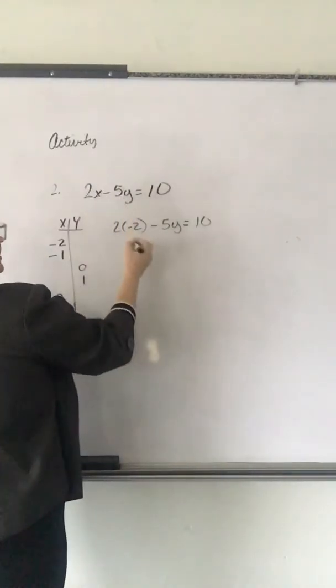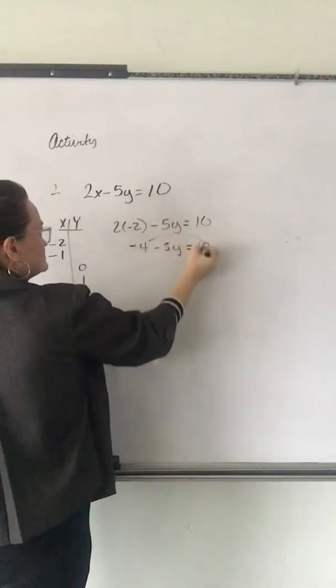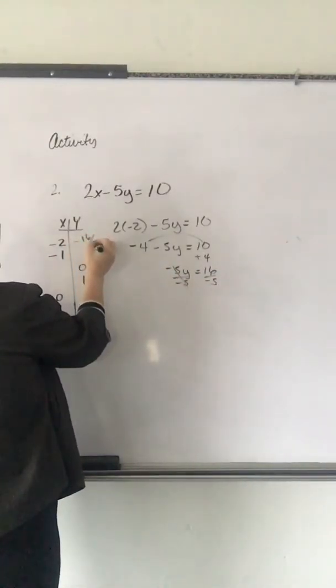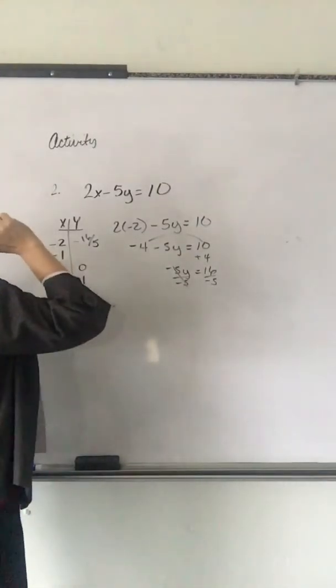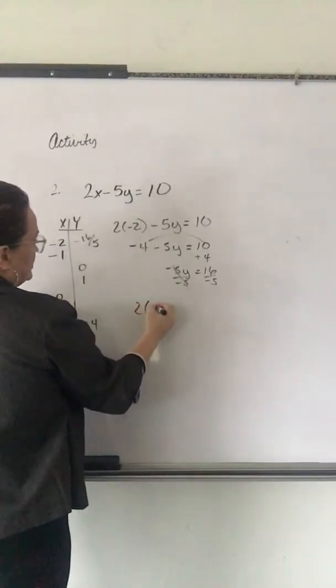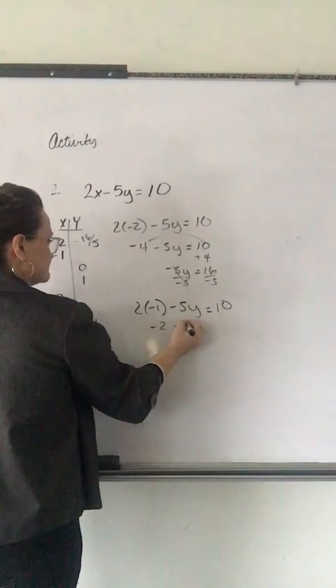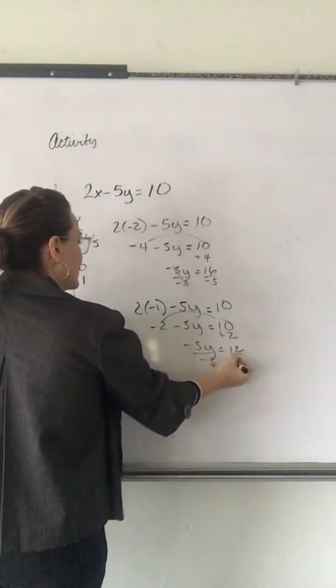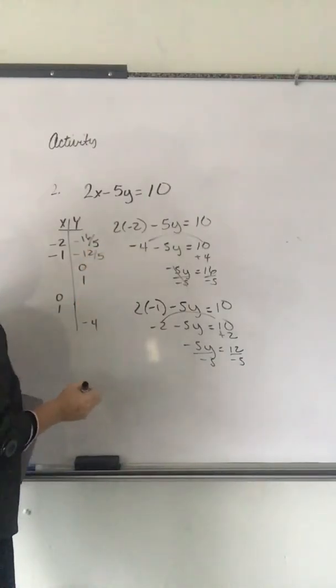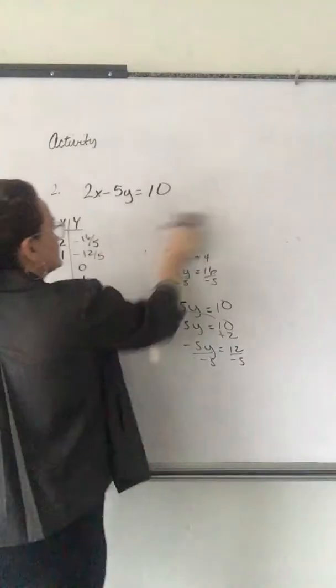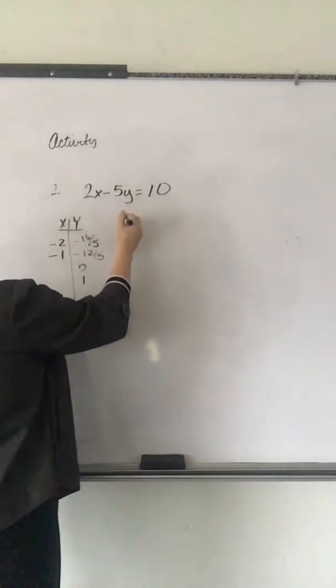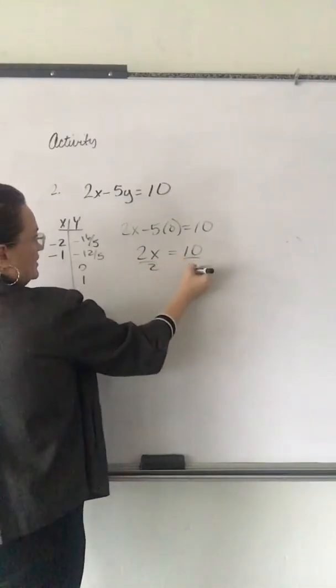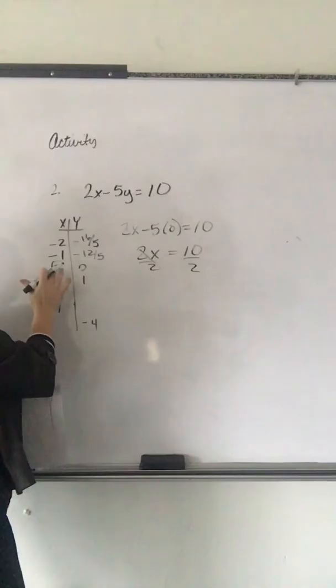So, first of all, we're plugging in negative 2 for the x. For that first answer, you should have got negative 16 fifths. And, then, for the next one, we're going to plug in negative 1 for x. So, 2 times negative 1 minus 5y equals 10. Throw the negative 2 over, making plus 2. These all come out to be fractions so far. You should get negative 12 fifths for that one.